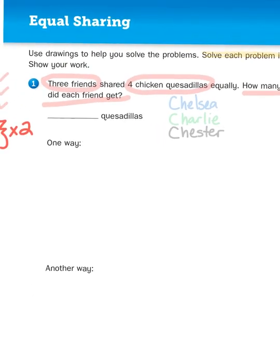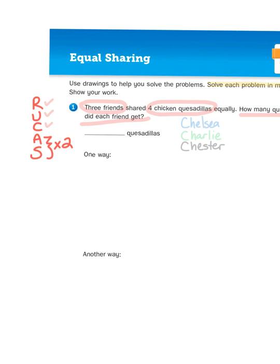So we have four chicken quesadillas, right? So let's draw a model. I'm going to draw four circles to represent the four quesadillas. Now, one way we could approach this problem is that we can simply give each friend their own quesadilla, and then divide the fourth one equally among the three friends, hence the title of this lesson, equal sharing.